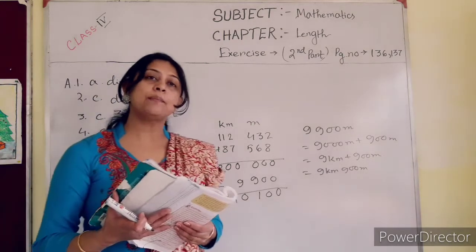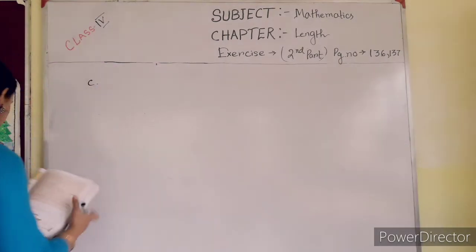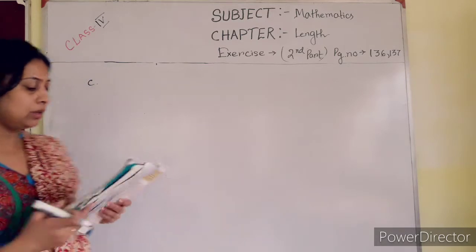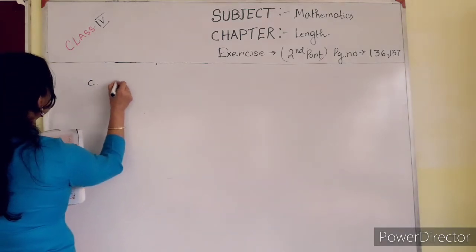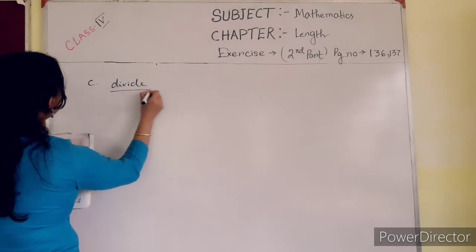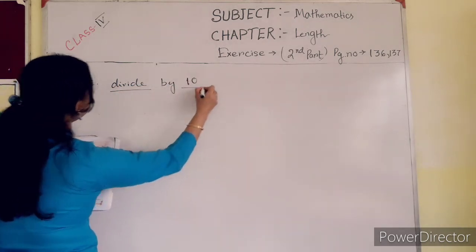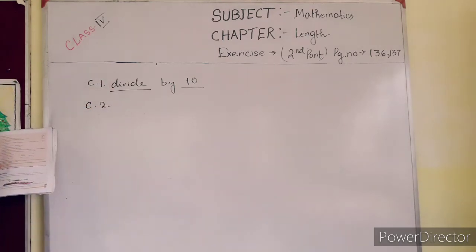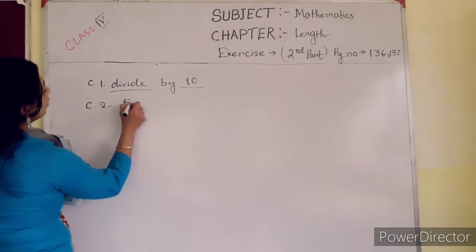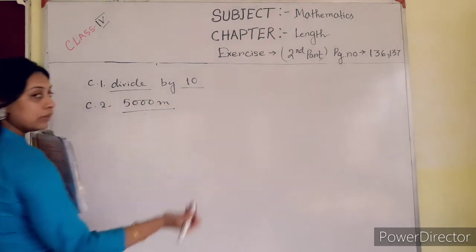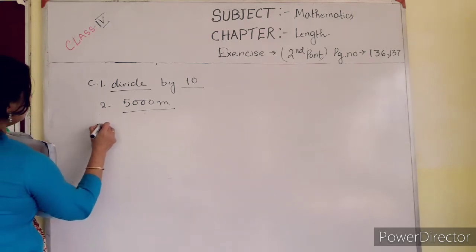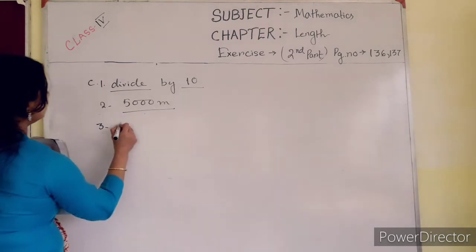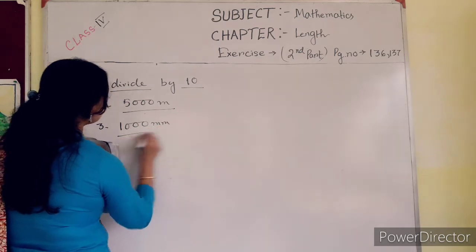Now the next one, number C, filling the blanks. To convert one millimeter to centimeter, we divide by 10. We divide by 10, okay? Now C2, dash meters make 5 kilometer. 5000 meter makes 5 kilometer. Now 3, dash millimeter make 1 meter. 1000 millimeter makes 1 meter.